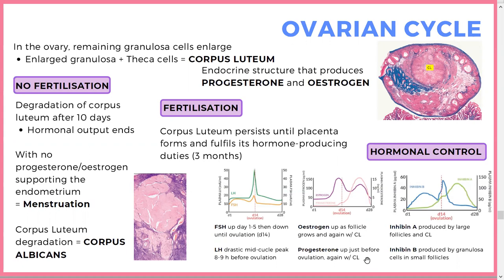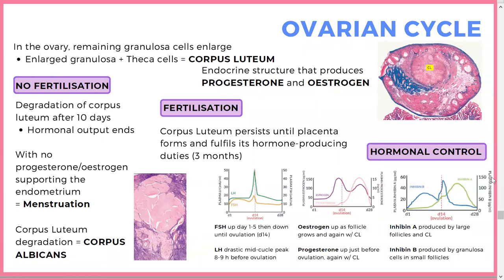Know your hormones and when they change. LH stays relatively constant until the surge 8-9 hours before ovulation — that's what drives ovulation. FSH increases as follicles develop then decreases. Estrogen is produced by the follicle initially, drops at ovulation, then rises again from the corpus luteum. Progesterone peaks when produced by the corpus luteum, then falls when it degrades. Inhibin A is produced by large follicles and corpus luteum; inhibin B is produced by granulosa cells during follicle growth.